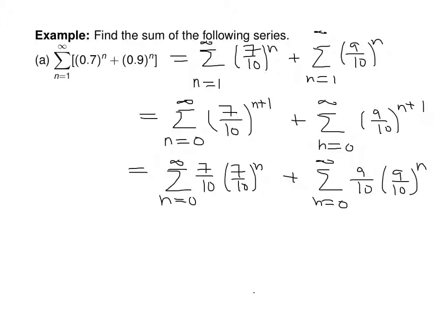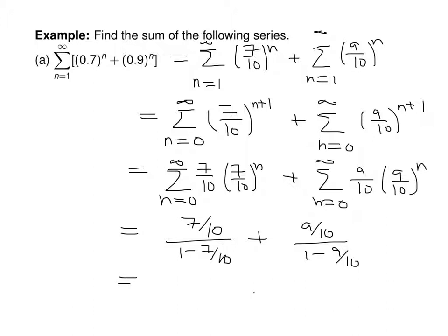Applying the geometric series formula: 7 tenths divided by 1 minus 7 tenths plus 9 tenths divided by 1 minus 9 tenths. The first sum is 7 thirds and the second sum is 9. Adding those together with a common denominator gives a total sum of 34 thirds.